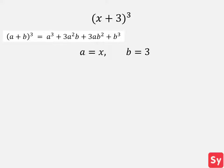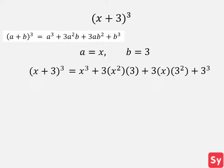First example, we have x plus 3 cubed. We take a look at the perfect cube identity. We can see that in this case a equals x and b equals 3. We plug these values into the identity. We then simplify and get that x plus 3 cubed equals x cubed plus 9x squared plus 27x plus 27, which is our answer.